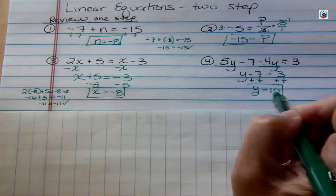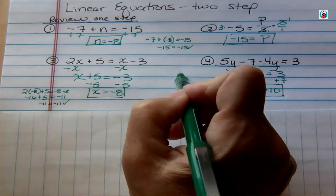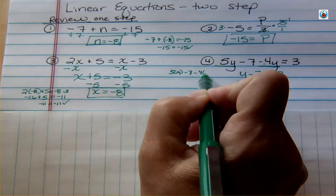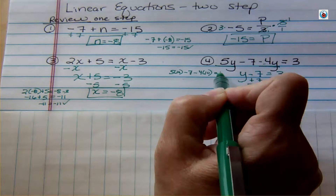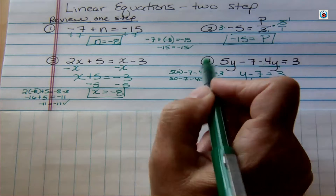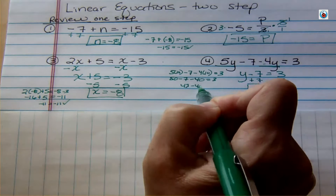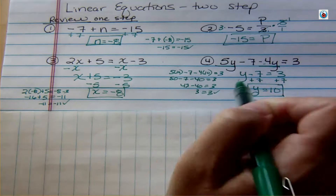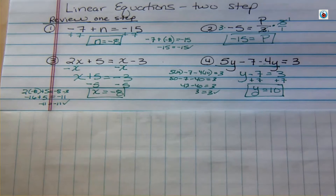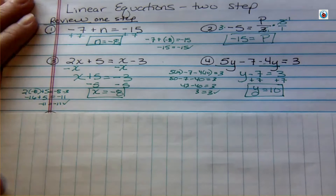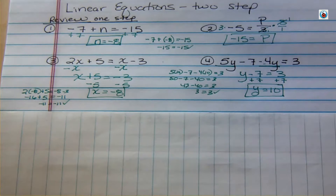I think y equals 10. Checking: 5 times 10 minus 7 minus 4 times 10 should equal 3. That's 50 minus 7 minus 40, which is 43 minus 40, which is 3. Got it right. These two problems show different types so that whatever you encounter, you have an example. Write the problems down, try them yourself, and pause the video.